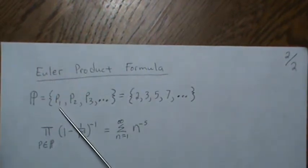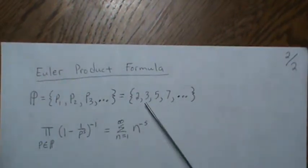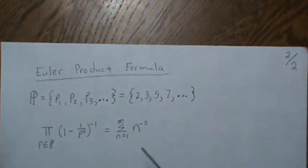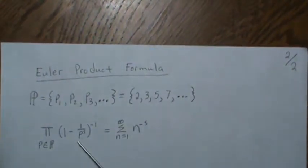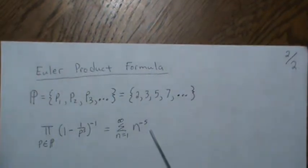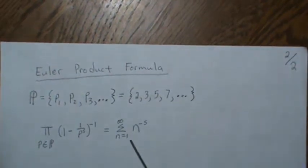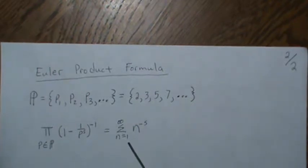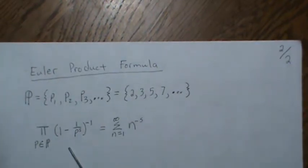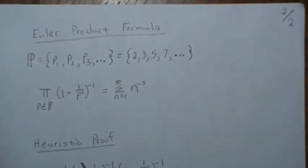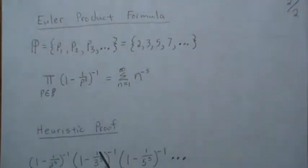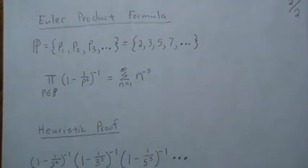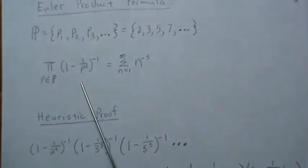Now the result: the Euler product formula. If we let the script P be the set of all primes — 2, 3, 5, 7, etc. — then this product over all primes is equal to this sum. This sum right here is the Riemann zeta function, which is actually a special case of the Dirichlet series. Let's prove that — it's a heuristic proof, but making it fully rigorous would lose some of the beauty.